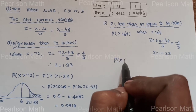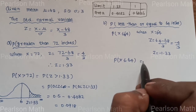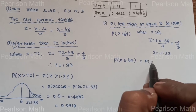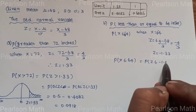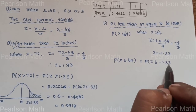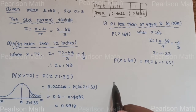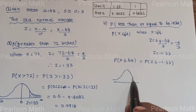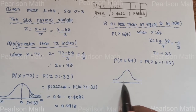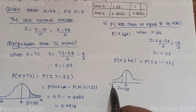So P(X ≤ 64) = P(Z ≤ −1.33). On the normal distribution curve, the center is 0 and −1.33 is on the left side, with the left tail shaded.